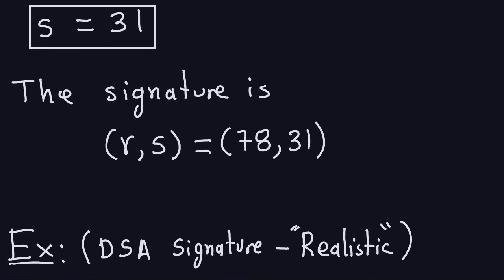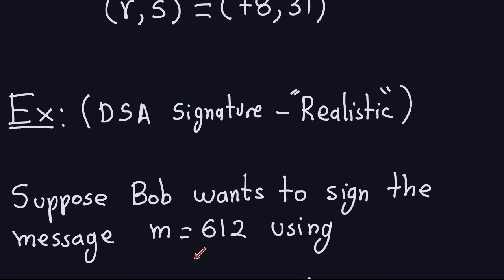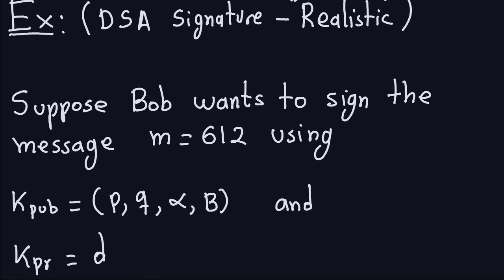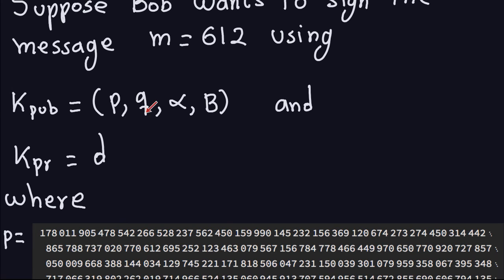Now let's move into a realistic example — this is why I gave you the small one first, so you can see how the algorithm works before the numbers get really large. Bob wants to sign the same message. The public key is P, Q, Alpha, and B. For real DSA, P must be 1024 bits, which means truly large numbers. As we saw in the previous video, we can generate P, Q, Alpha, and B using Java, and other languages have similar libraries.